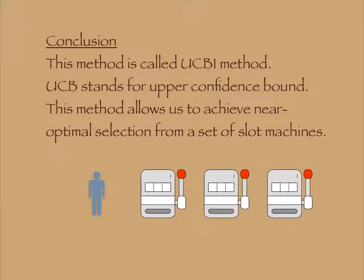Conclusion: this method is called the UCB1 method. UCB stands for Upper Confidence Band. This method allows us to achieve near optimal selection from a set of slot machines.